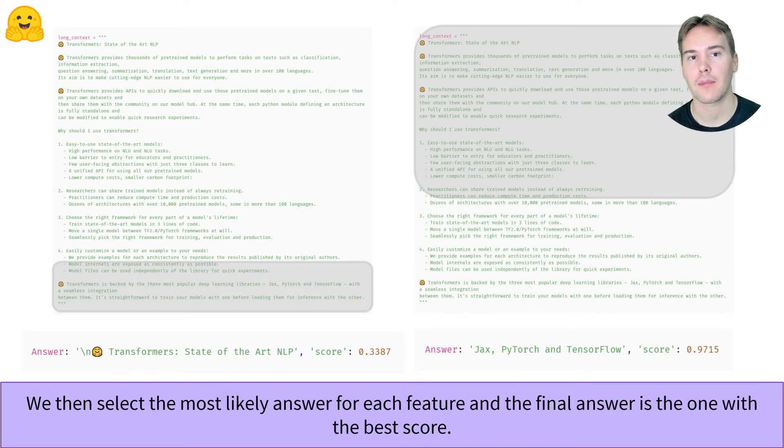Here is how our very long context gets truncated into two features with some overlap. By applying the same post-processing we saw before for each feature, we get an answer with a score for each of them, and we take the answer with the best score as the final solution.